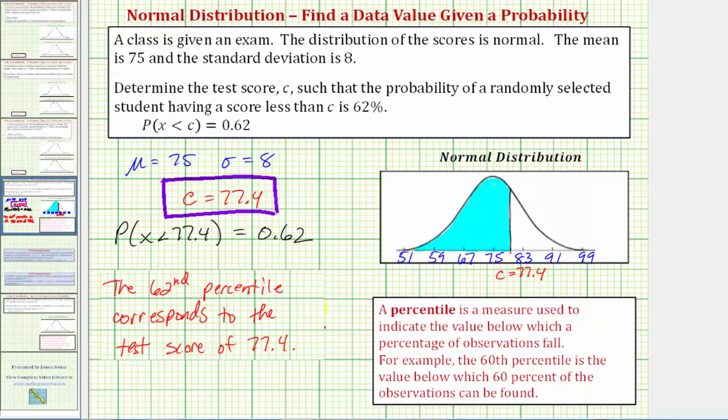A lot of times when you take a standardized test they give the results as a percentile and this is what it means. For example, if you scored in the 80th percentile, you scored better than 80 percent of the people that took the test. I hope you found this helpful.